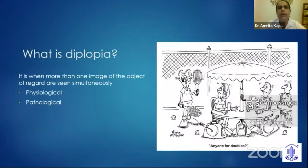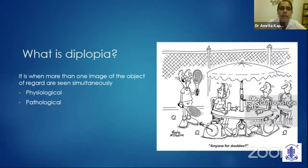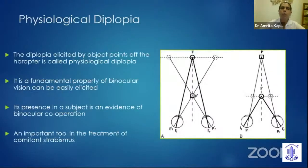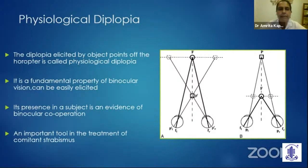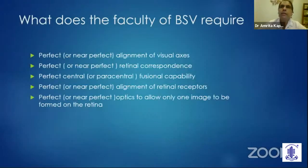What is diplopia? It is when you see more than one image of the object of regard. When more than one image is seen simultaneously, it may be physiological or it may be pathological. Physiological diplopia is a fundamental property of binocular vision and its presence in a subject is a very reassuring sign, as it is evidence of binocular cooperation. It remains a very important tool in the treatment of comitant strabismus.